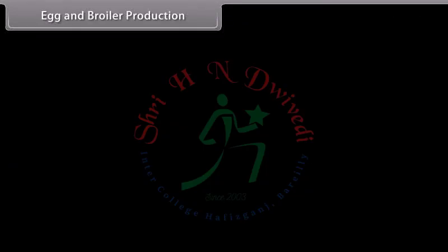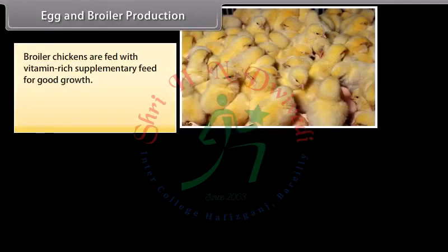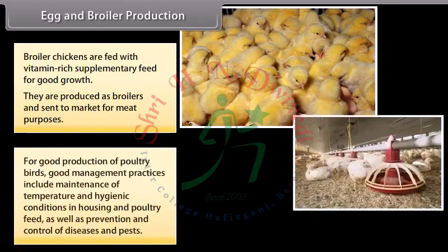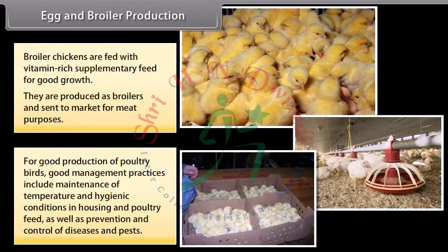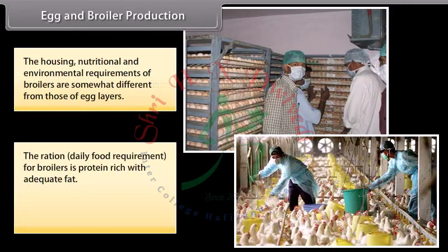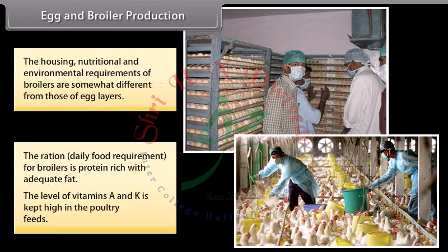Broiler chickens are fed with vitamin-rich supplementary feed for good growth and are sent to market for meat purposes. For good production of poultry birds, good management practices include maintenance of temperature and hygienic conditions in housing, poultry feed, and prevention and control of diseases and pests. The housing, nutritional and environmental requirements of broilers differ from those of egg layers. The daily ration for broilers is protein-rich with adequate fat, and the levels of vitamins A and K are kept high in poultry feeds.